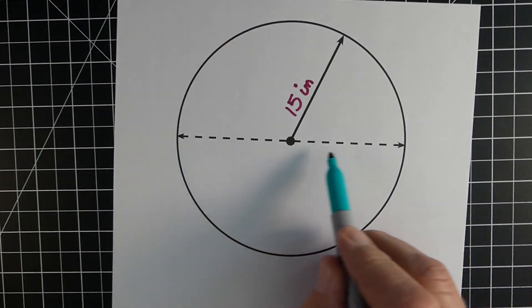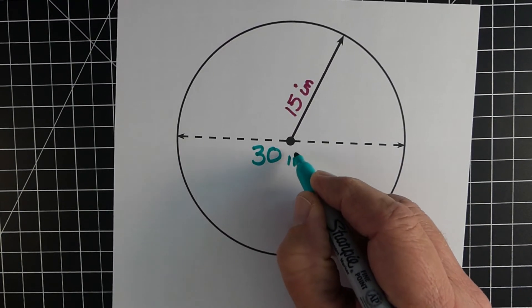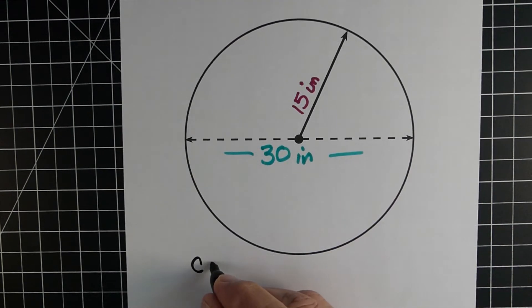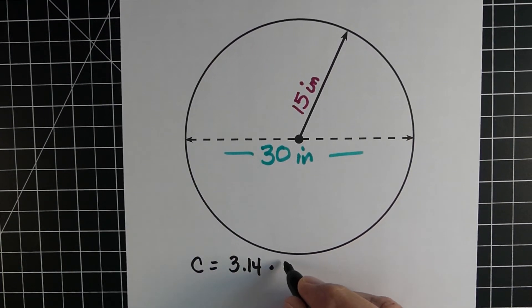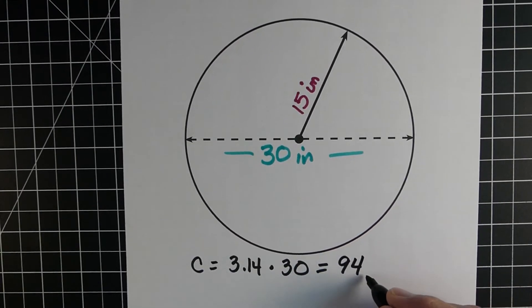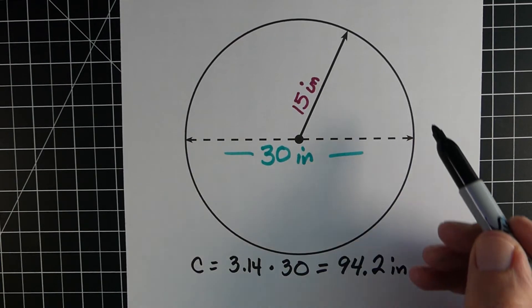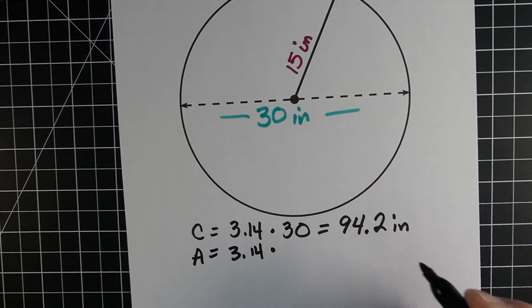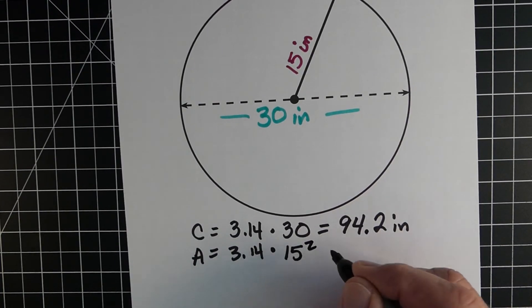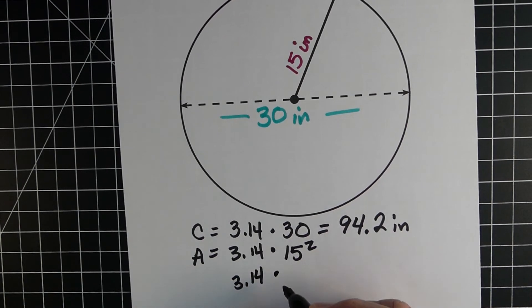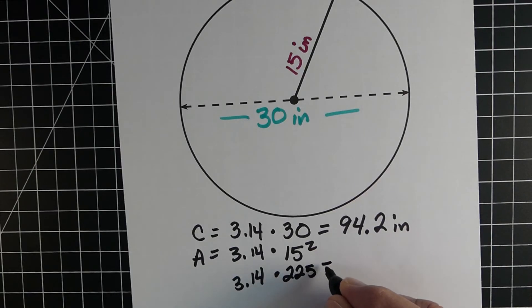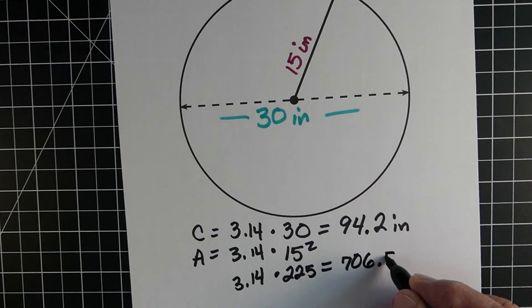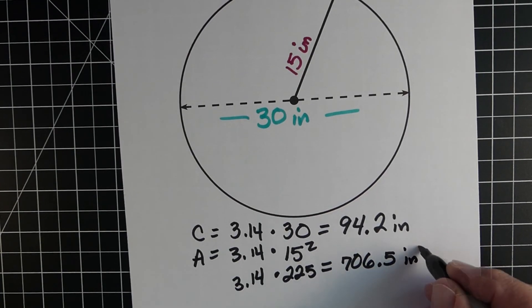Our last example, problem three: the radius is 15 inches. We double it to get a diameter of 30 inches. For circumference: pi times 30 gives us 94.2 inches. For area: 3.14 times 15 squared. Fifteen squared is 225, so pi times 225 gives us 706.5 inches squared.